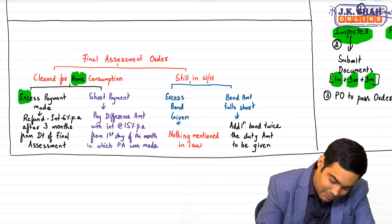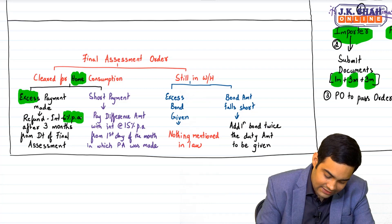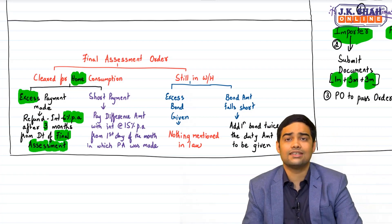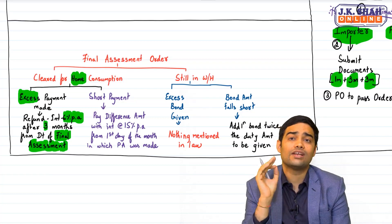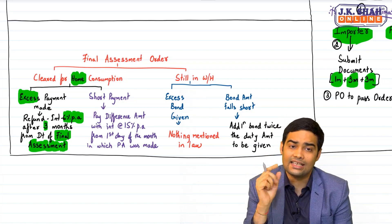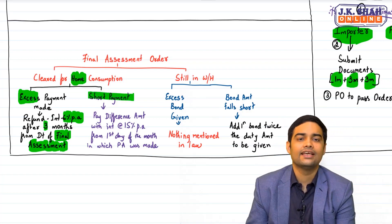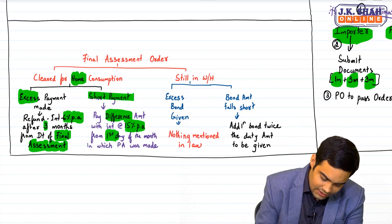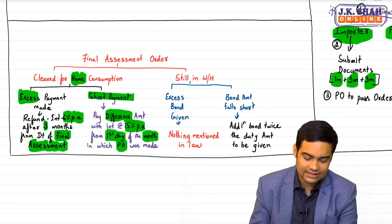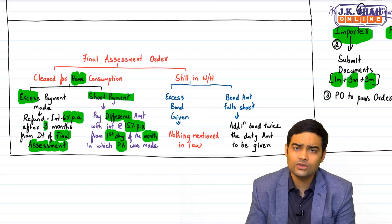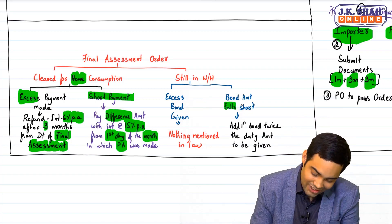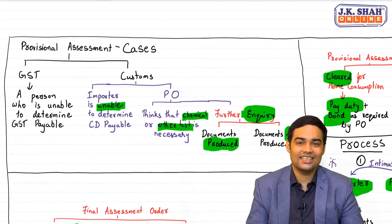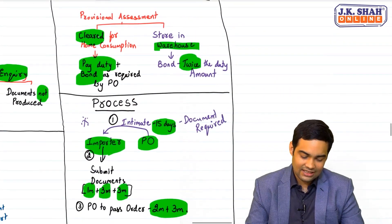Be very careful - everywhere else the law uses 'three months from the date of receipt of refund application', but here three months is from the date of final assessment. If there is a short payment, I have to pay the difference along with interest at 15 percent per annum from the first day of the month in which provisional assessment was made. If goods are still in warehouse: if excess bond was given, nothing is mentioned; if bond falls short, I have to top up the bond amount.